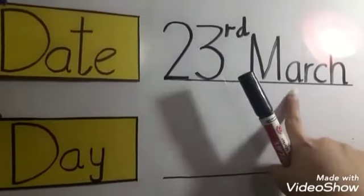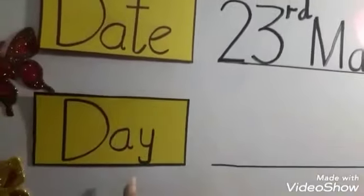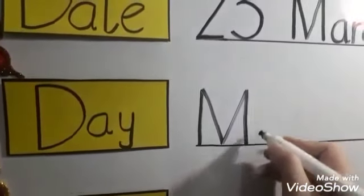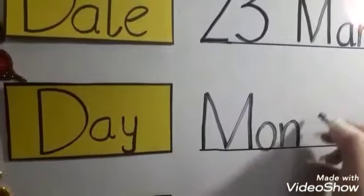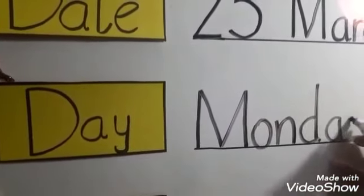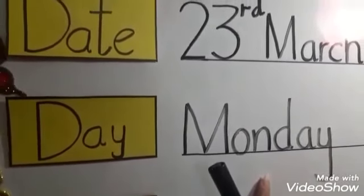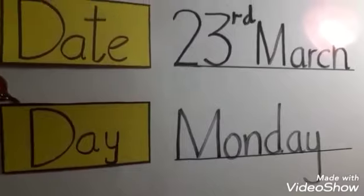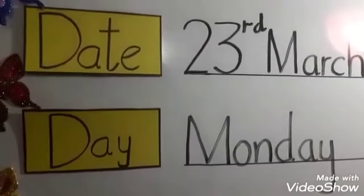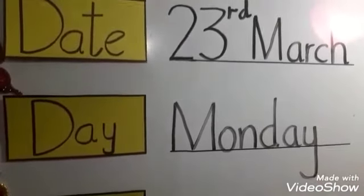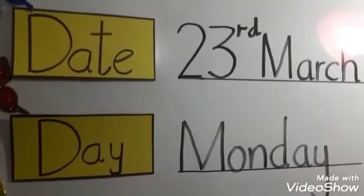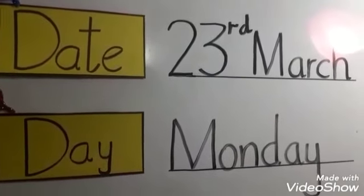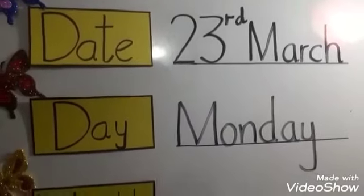23rd March. Now what day is today? Today is Monday. All of you speak up with me. Today is Monday. So let's sing a song of days' names: There are seven days, there are seven days in one week, in one week. Monday, Tuesday, Wednesday, Monday, Tuesday, Wednesday, Thursday, Friday, Thursday, Friday, and Saturday. Sunday is our holiday, Saturday, Sunday is our holiday.